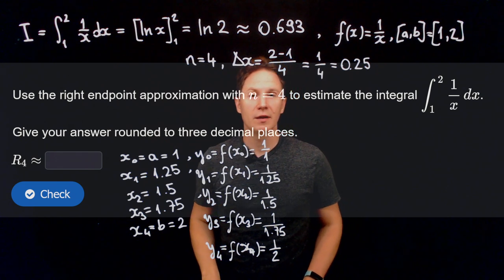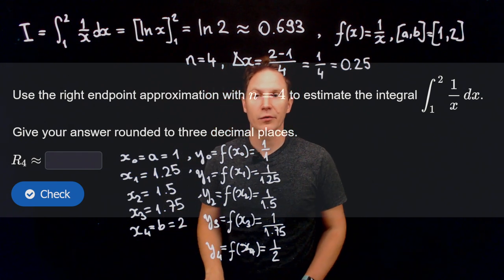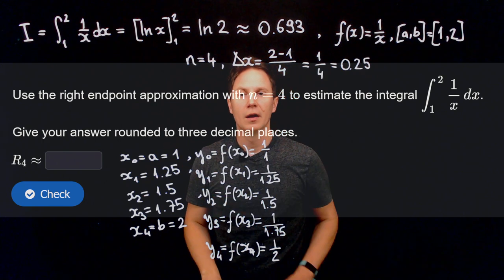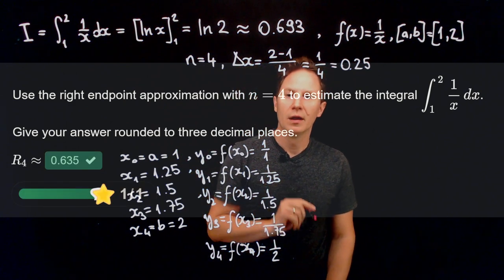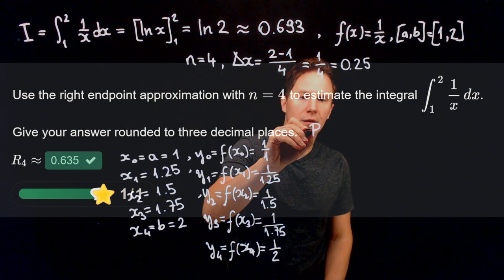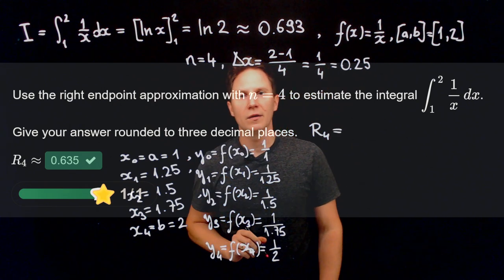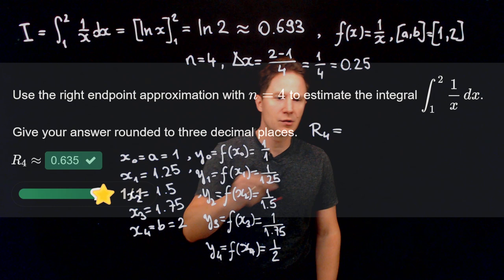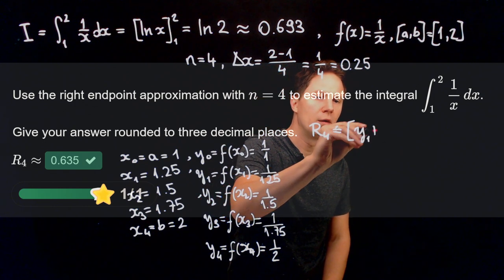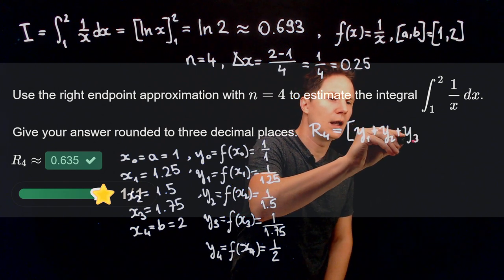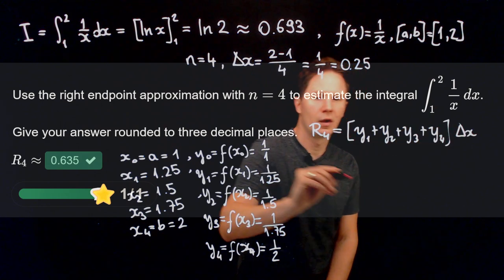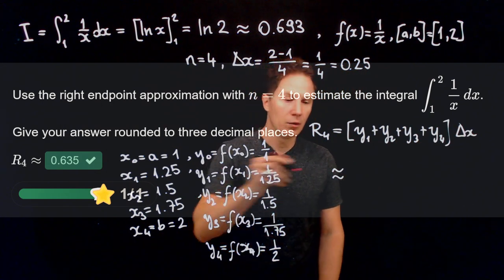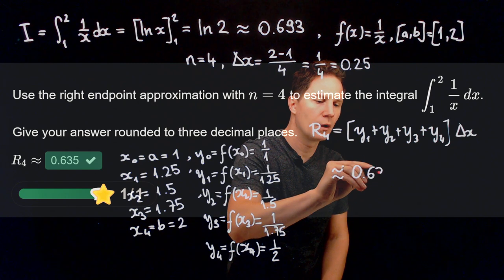Now use the right endpoint approximation with n equals 4 to estimate the same integral. The right endpoint approximation R4 means taking the right endpoints of each subinterval: we start with y1, then add y2, y3, and y4, each multiplied by delta x. This gives approximately 0.635.